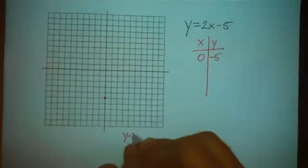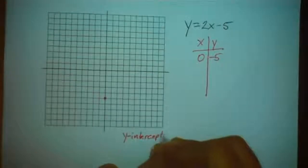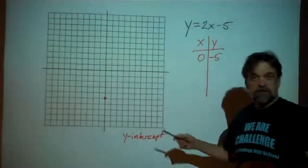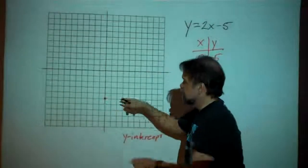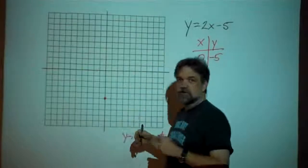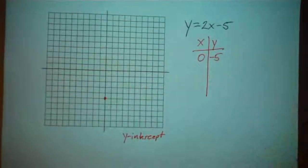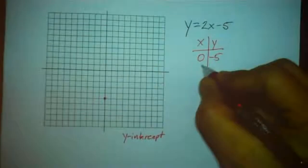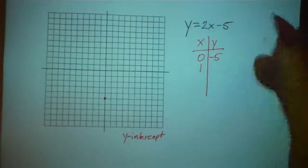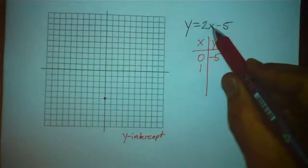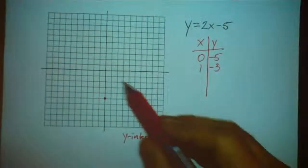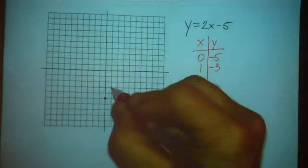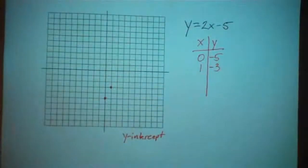This is a very important point. We think of it as the starting point for our line — we start right there and then go off in either direction according to the slope. Let's plug in one more point. When x is 1, y is going to be 2 times 1, which is 2, minus 5 is negative 3. So the point is (1, -3).